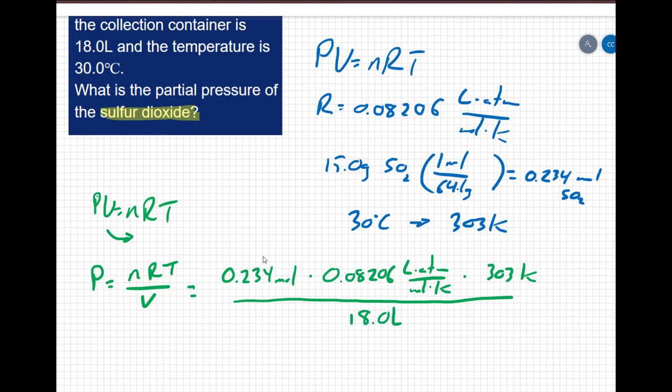Check my work by canceling out units. Moles cancel out moles, liters cancel out liters, kelvin cancel out kelvin. I'm left with atmospheres, which makes sense because I'm solving for pressure. All is said and done, I get a pressure of 0.323 atmospheres.